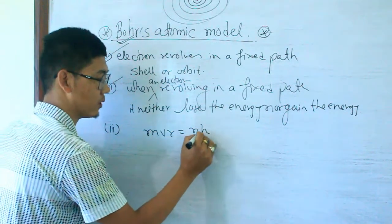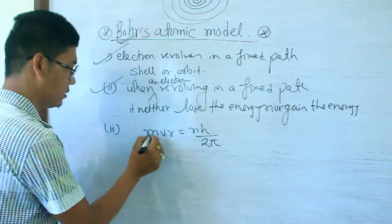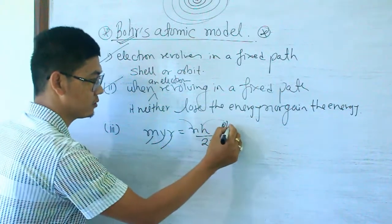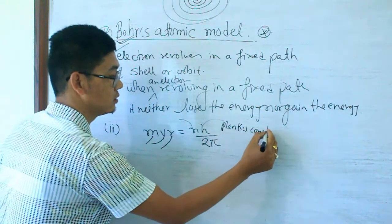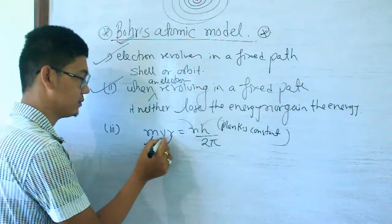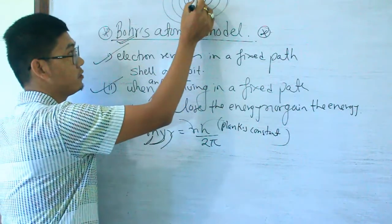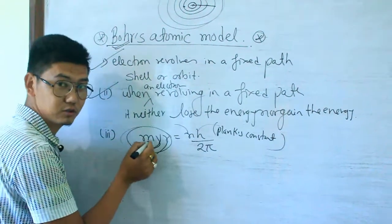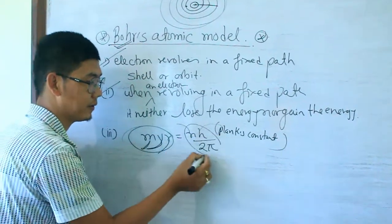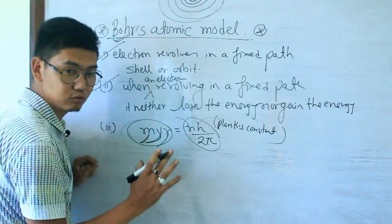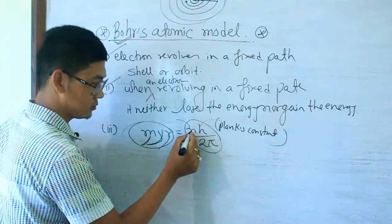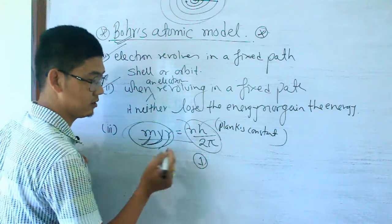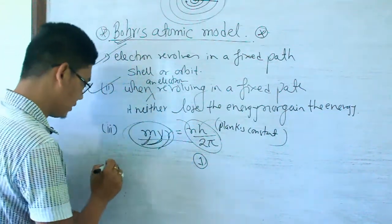With that formula: mvr equals nh divided by 2π — angular momentum equals mass of electron times velocity times r (radius), where n is the number of the shell and h is Planck's constant. So the first shell has n equal to 1, and the values vary for higher shells.